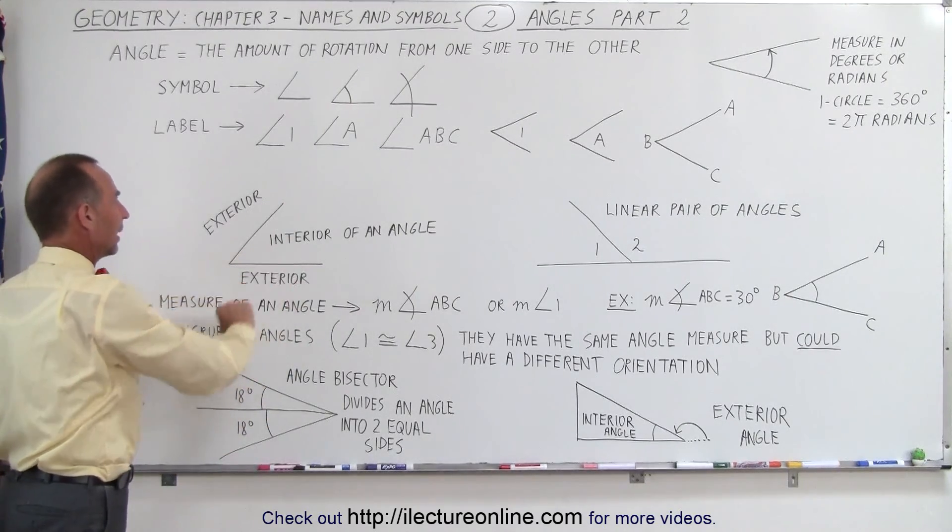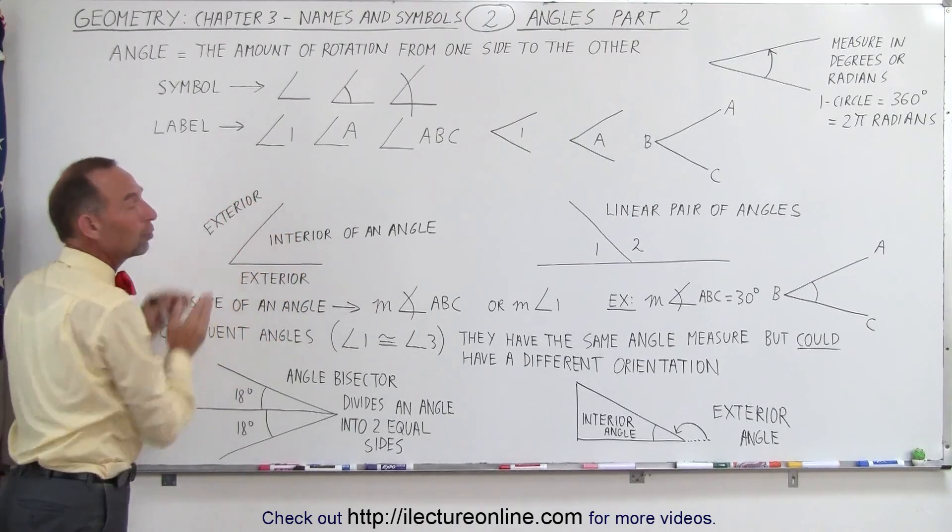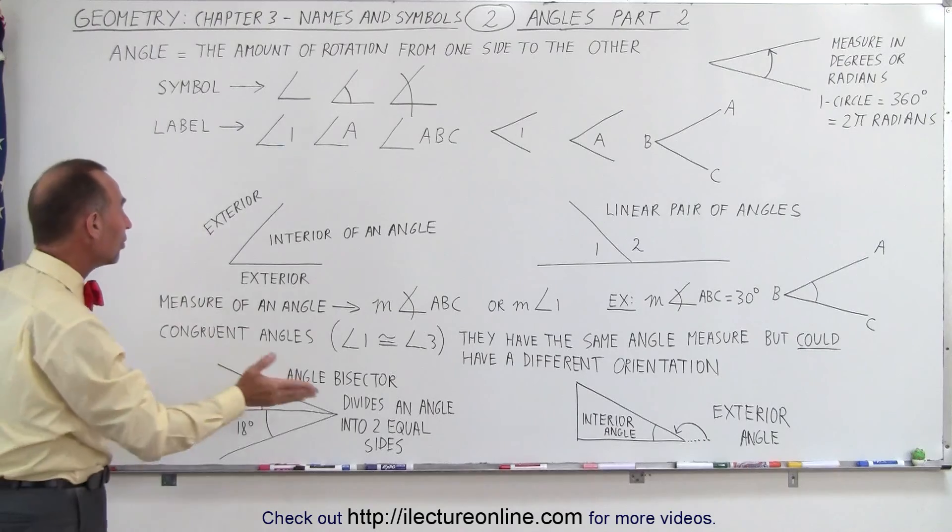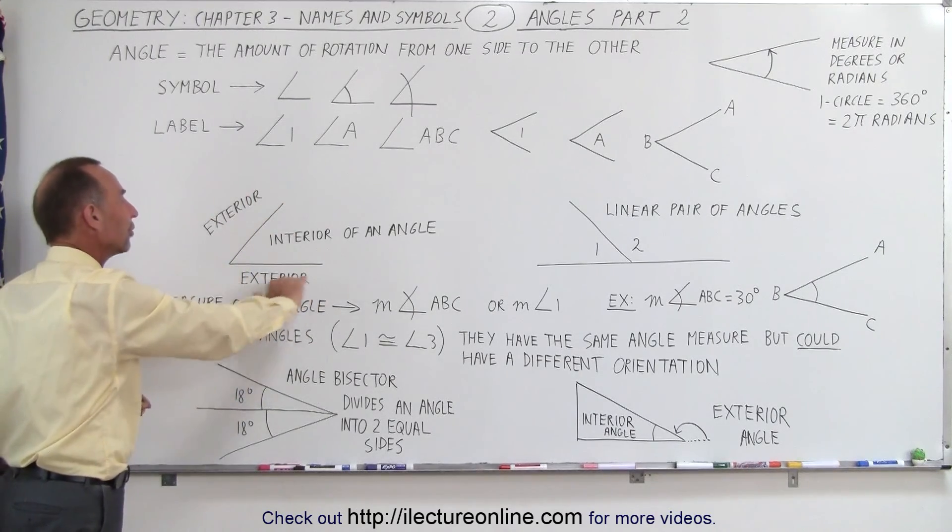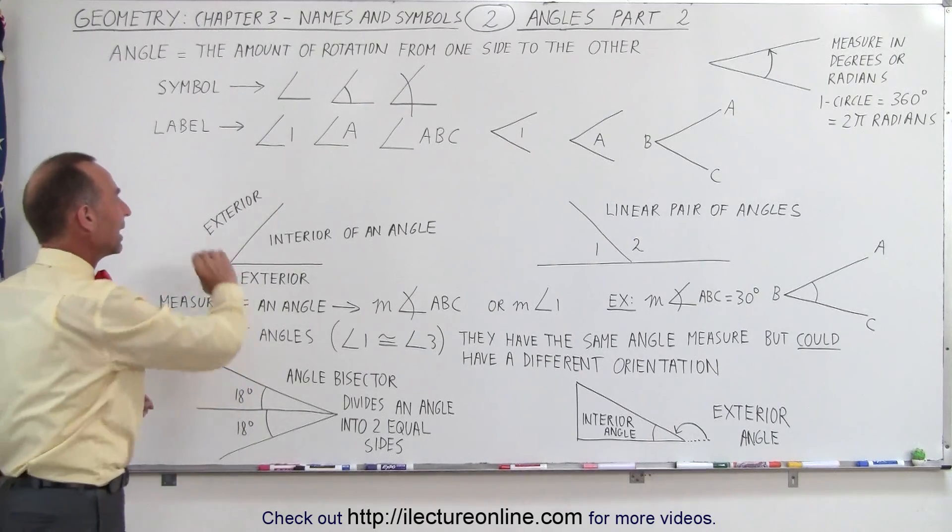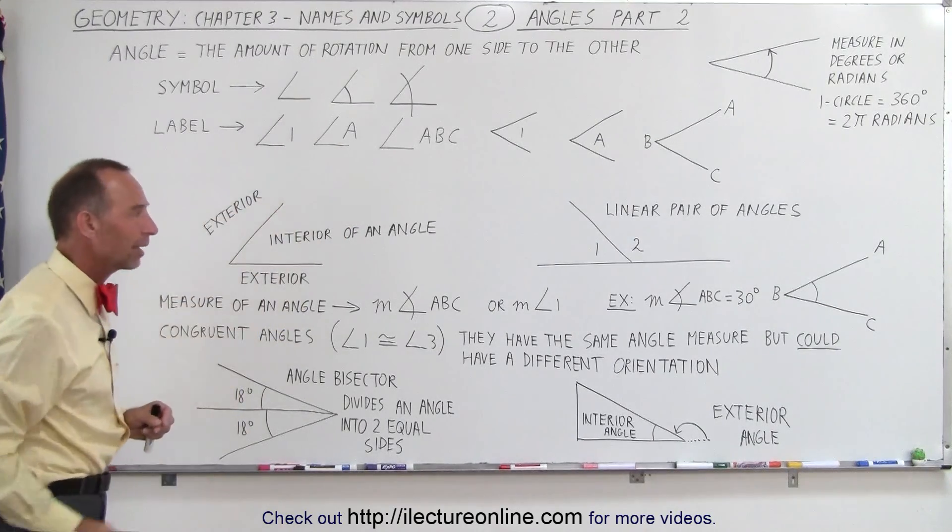Here we have an angle drawn, and notice that there's what we call the interior of the angle, which is between the two sides. Then there's the region on the other side of the two sides, which is called the exterior region of an angle. So we have the interior of an angle and the exterior of an angle.